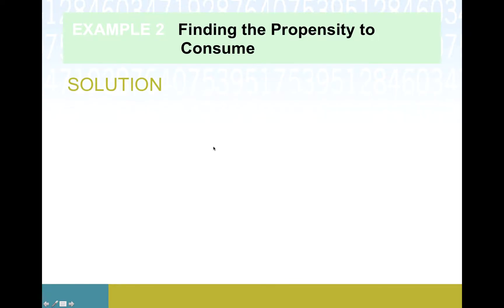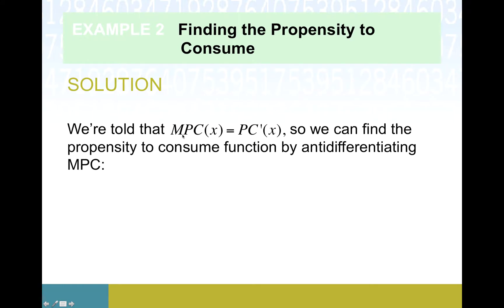So here's our thought process. We're basically told, it's written in words so we've got to translate, but that MPC is the rate of change in propensity to consume. But that's what the derivative is. Rate of change in PC would be PC prime, and we're being told that's MPC, which is great. So now we have actually an equation to set up. If we know what the rate of change is and we want to walk that backwards to an actual function, that's exactly what this new tool we've been developing will do for us: antidifferentiation.